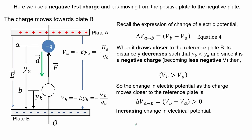Here we use a negative test charge moving from the positive plate to the negative plate. Recall the expression for the change in electric potential, equation 4. When it draws closer to the reference plate B, its distance Y decreases such that Y_B is less than Y. Since it is a negative charge, the electric potential becomes less negative at shorter distance, so the electric potential at B is greater than at A — an increasing change in electrical potential.